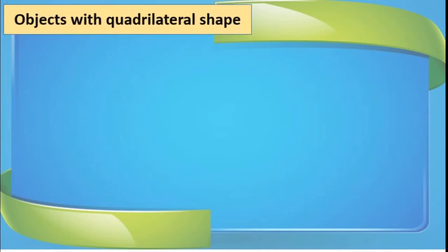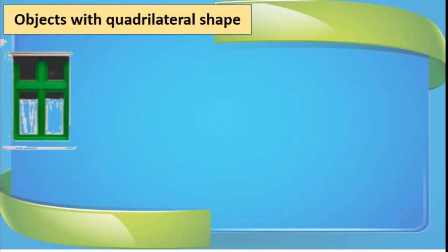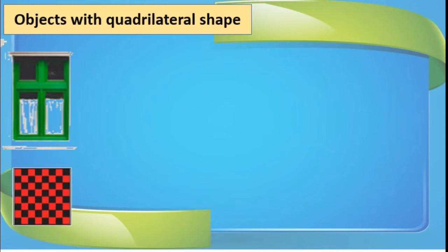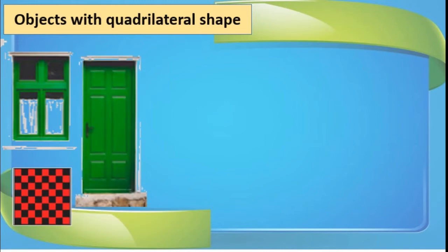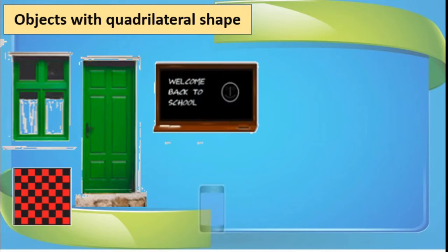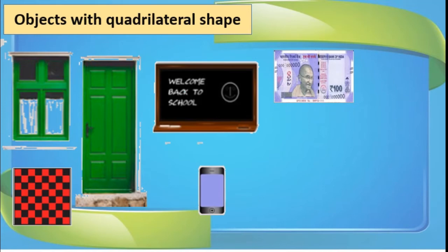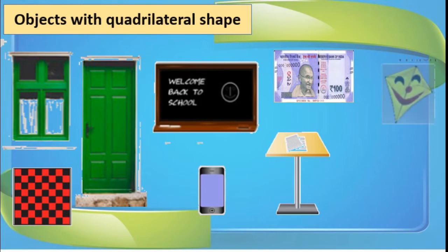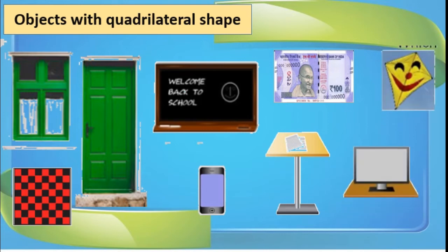We see so many objects with this shape in our day-to-day life — a window, chess board, door, blackboard, mobile phone, currency note of Rs. 100, tabletop, kite, and the monitor of a computer. So many objects in our surroundings and in our house have this shape. Now we move to the next shape.